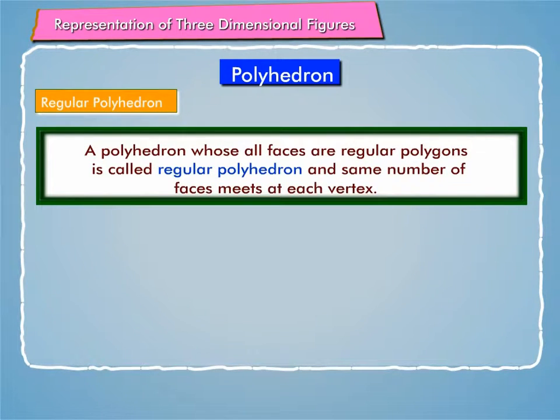A polyhedron whose all faces are regular polygons is called regular polyhedron and same number of faces meet at each vertex. The figure on screen is a regular polyhedron. Polyhedron shown on screen is not regular.